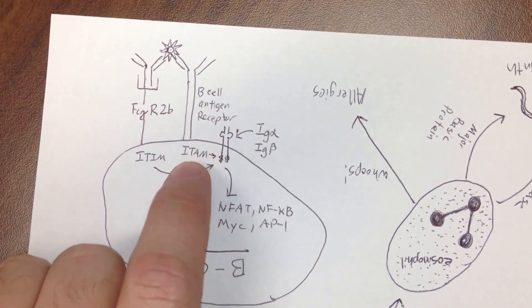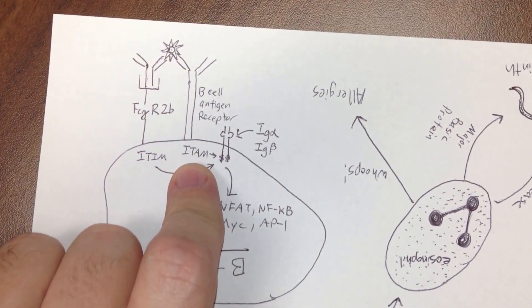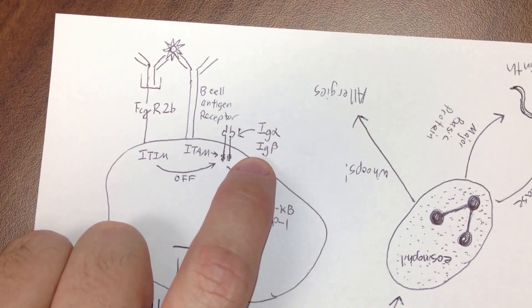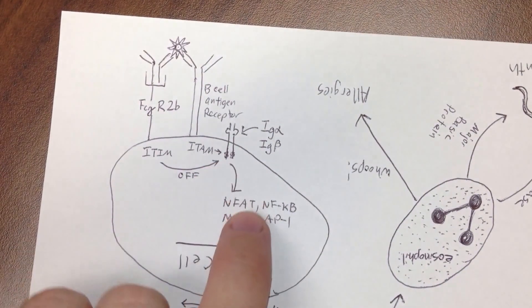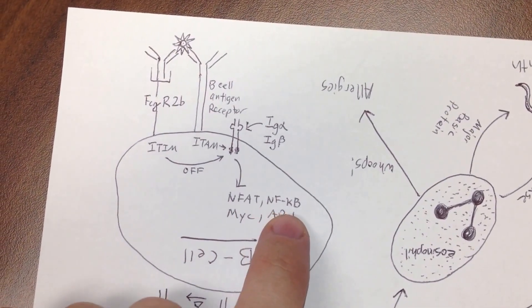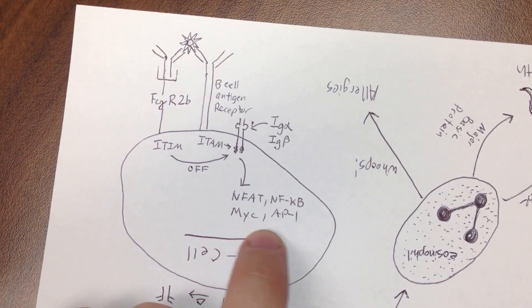If you remember, there's also a B cell antigen receptor that might have also bound to it, and that will normally have an ITAM on it. And ITAM will normally connect with Ig alpha and Ig beta, and that will send down a signal pathway for NFAT or NF-kappa-B or Myc or AP-1 to go into the nucleus and cause some things to happen.